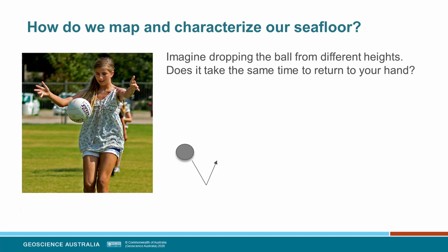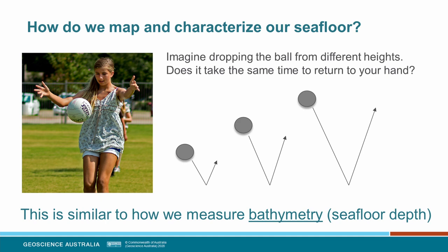Imagine that you're holding a ball — a soccer ball, volleyball, basketball, doesn't matter — and you're dropping it from different heights. Think about whether it takes the same time for the ball to return to your hand if you're at different heights. What you've probably worked out is that it won't. If the ball is very close to the ground, it returns quite quickly. But as you stand up it returns slower, and if you drop it from a roof it takes even longer. This is the same technique we use to figure out the depth of our seafloor, and it's called bathymetry — it means seafloor depth.